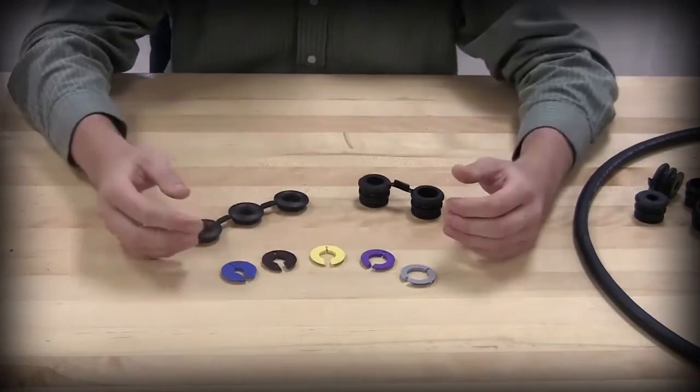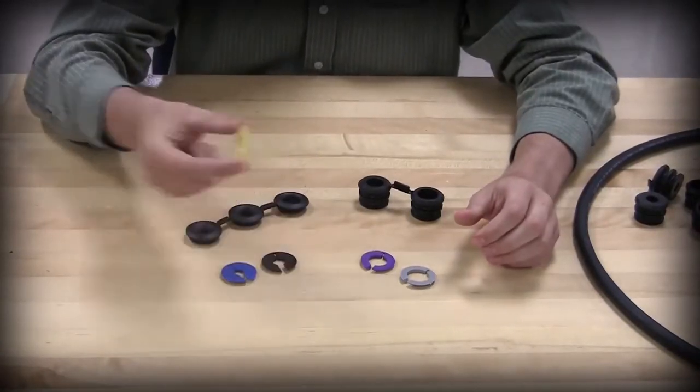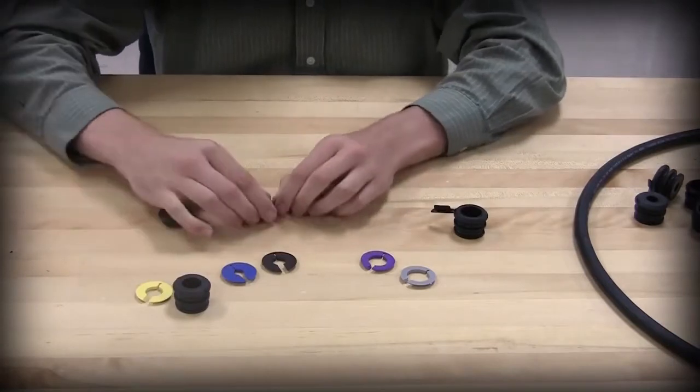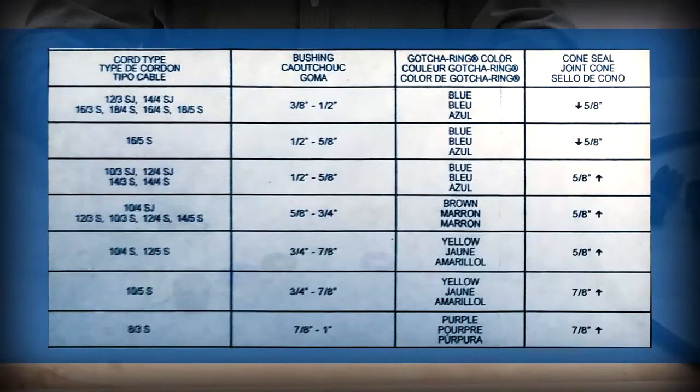Based on the cord type and diameter, select the appropriate gotcha ring, rubber bushing, and cone seal. Refer to the chart and the instructions for sizing information.